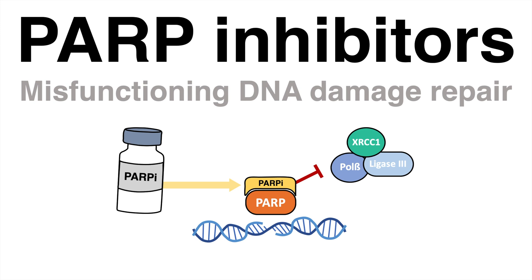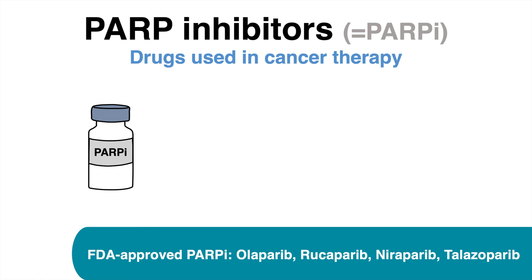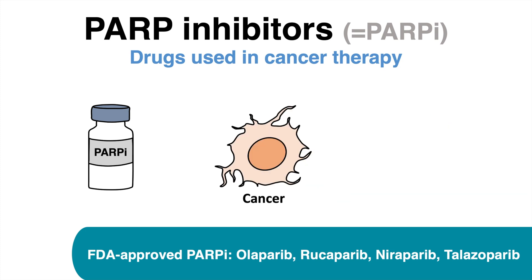PARP inhibitors are FDA-approved drugs which are often used in cancer therapy. A misfunctioning DNA damage repair in tumor cells is abused to push cells to undergo apoptosis. PARP inhibitors are drugs which are not exclusively but mainly used to treat cancer patients. They are especially efficient if the patients have a misfunctioning DNA damage repair, such as a BRCA1 mutation.